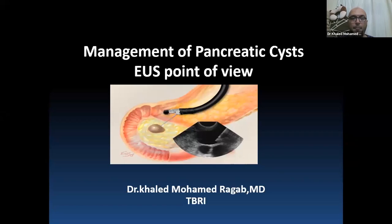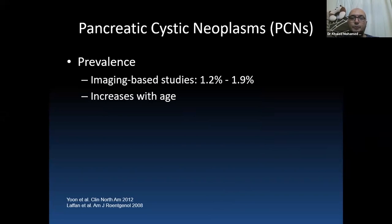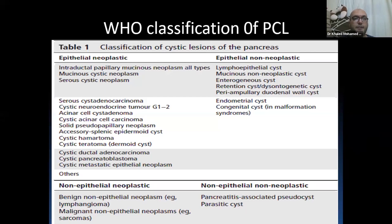Pancreatic cystic neoplasm prevalence based on studies is 1.2 to 1.9%, and cystic detection increases with age. The WHO classification of pancreatic cystic lesions classifies them into epithelial neoplastic, epithelial non-neoplastic, non-epithelial neoplastic, and non-epithelial non-neoplastic lesions.